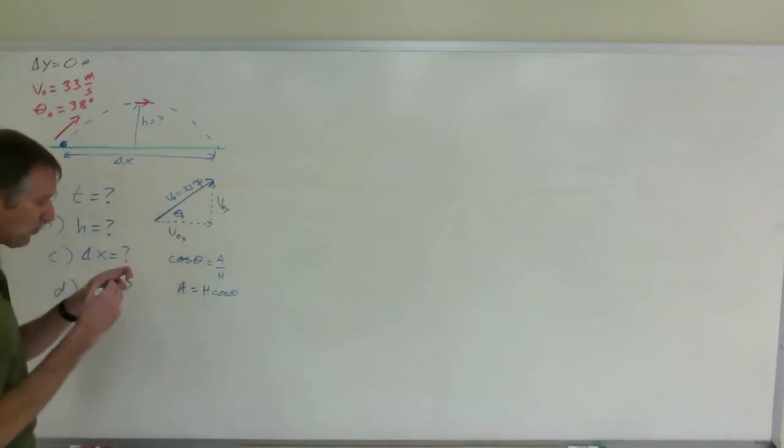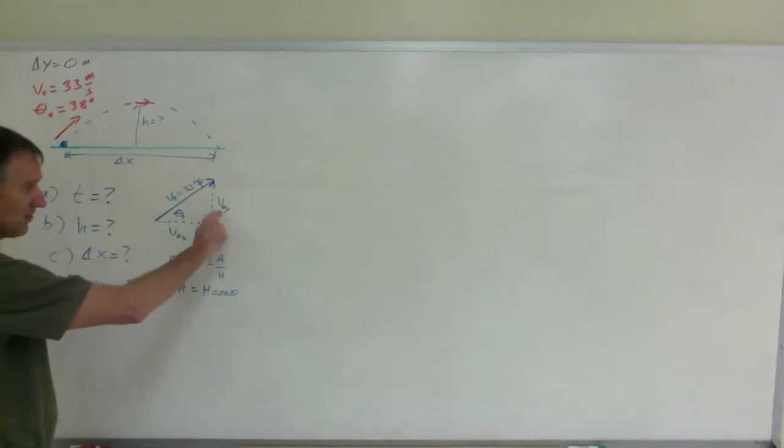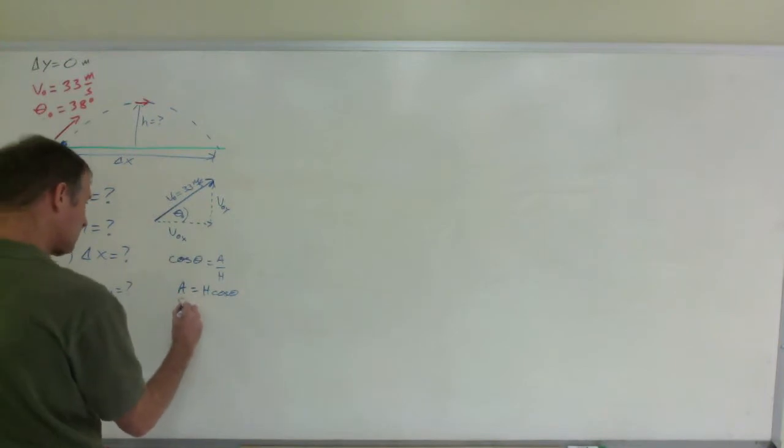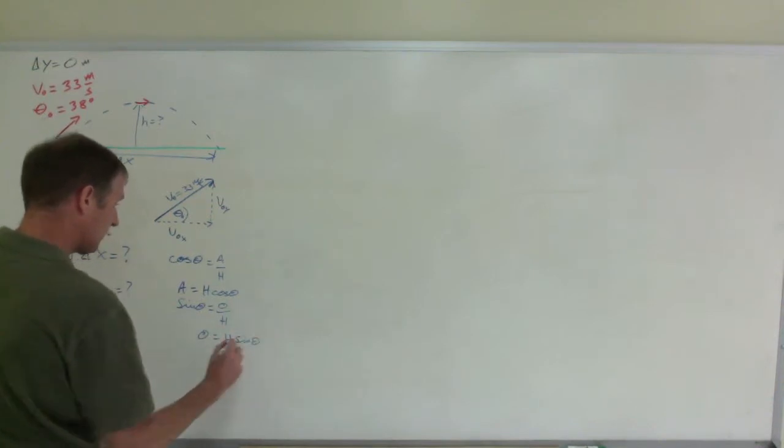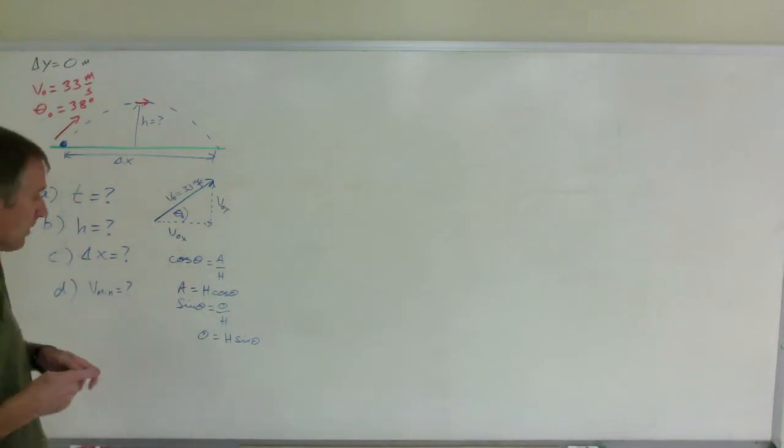Using the same process, that is how we will find this. But this is opposite the angle, v sub zero y. And so I will use sine because sine of that angle is opposite over hypotenuse. So the opposite side equals the hypotenuse times the sine of the angle. Be sure your calculator is in degree mode.